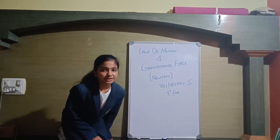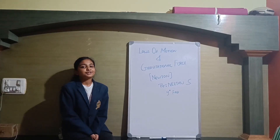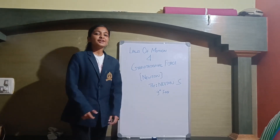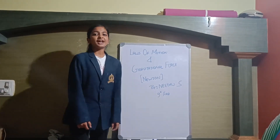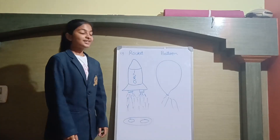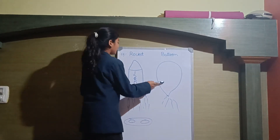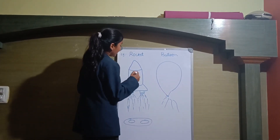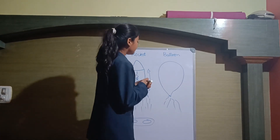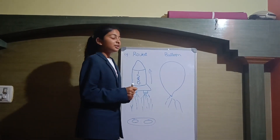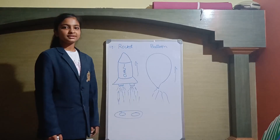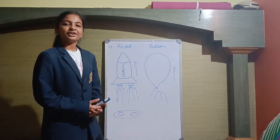Now let us know about Newton's third law of motion. Newton's law of motion states for every action there is an equal and opposite reaction. For example, in a rocket, due to action and reaction the rocket moves upwards. And in a balloon, the air rushes out, so due to the air rushing out the balloon flies or moves upwards. This states Newton's third law of motion.